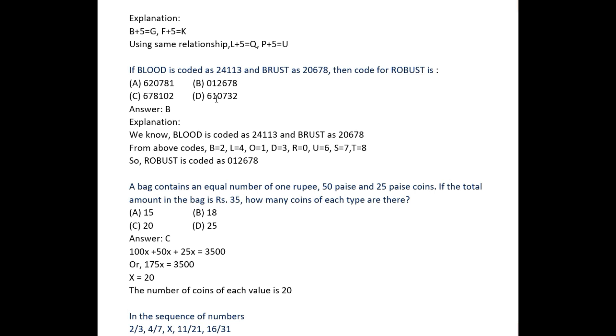BLOOD is coded as: B=2, L=4, O=1, D=3. Just like this, take the conversion from here: B=2, U=6, S=7, T=8. You have to put the values of ROBUST following these digits. So ROBUST is coded as 012678. This is the way you do these types of sums.